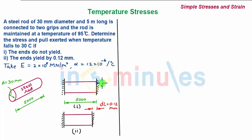This means your delta T is negative and the process is cooling. In the first case they have asked if the ends do not yield, what are the stresses and pull?